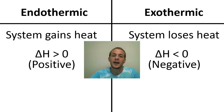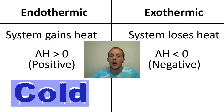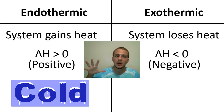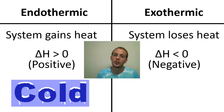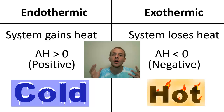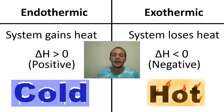In an endothermic process you can tell whether delta H is positive or negative just by feeling the container. If the container is cold to the touch, that tips you off that you have an endothermic process — the system is taking in heat, and your hand, being part of the surroundings, gets colder. Conversely, in an exothermic process the container is going to feel very hot because thermal energy is being released into the surroundings, warming up your hand.